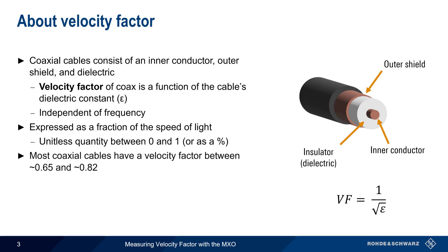Most coaxial cables have a velocity factor between about 0.65 and 0.82, although in some cases, you may see cables with a velocity factor as low as 0.5 or as high as 0.9.